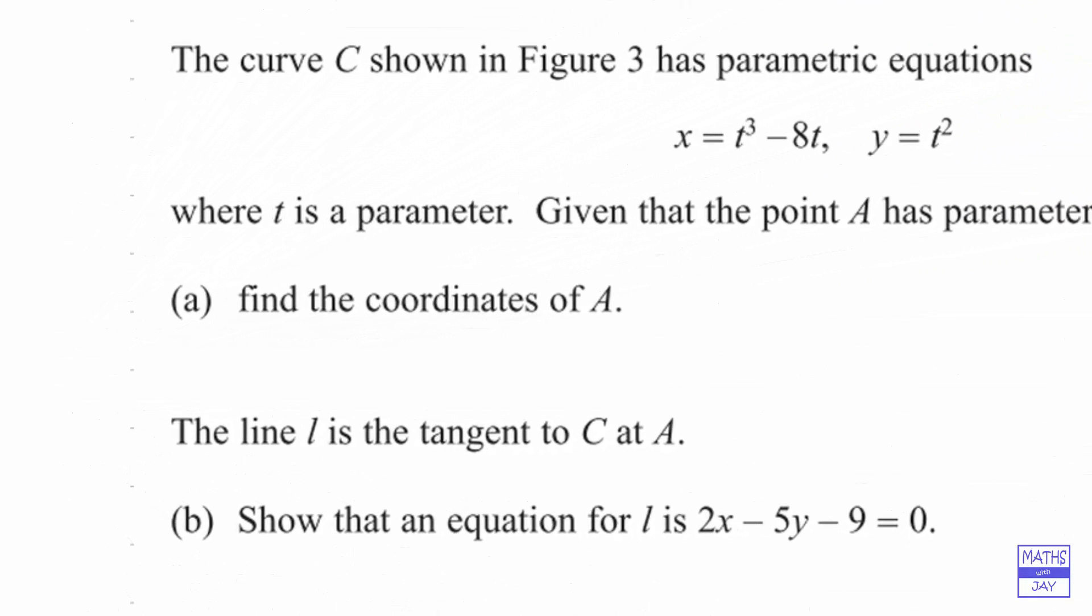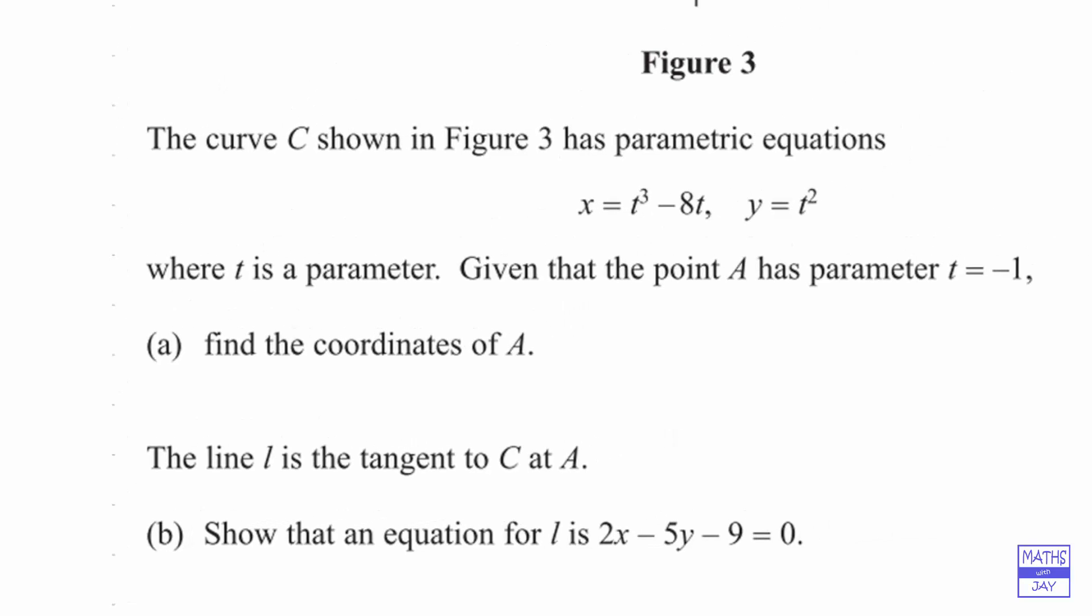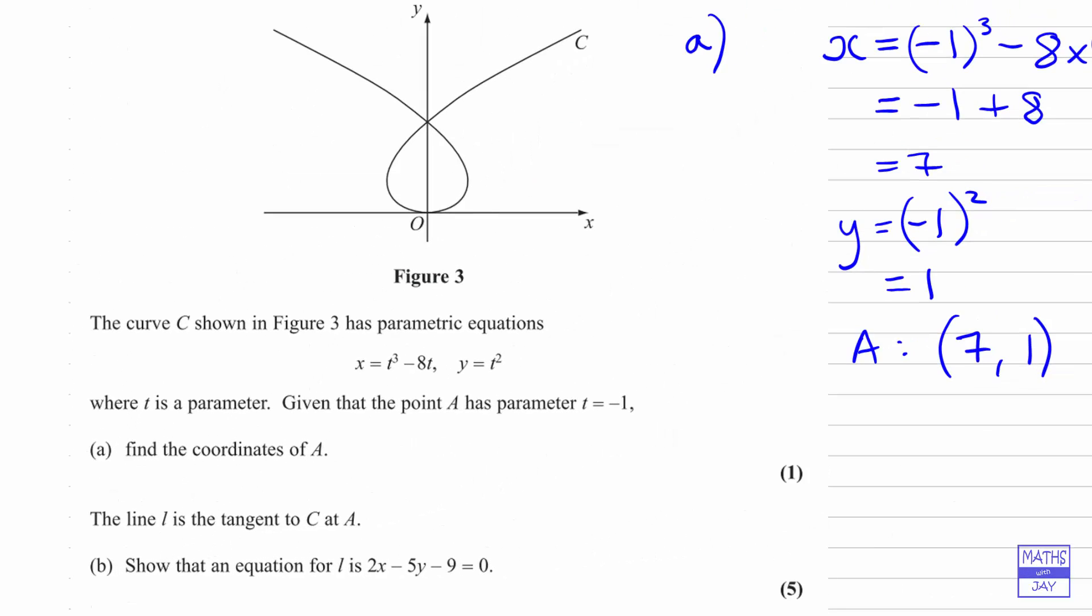In part b, we're told that the line l is the tangent to c at A. So let's sketch that onto the graph. We can see that A has positive coordinates, so it must be to the right of the y axis and above the x axis.